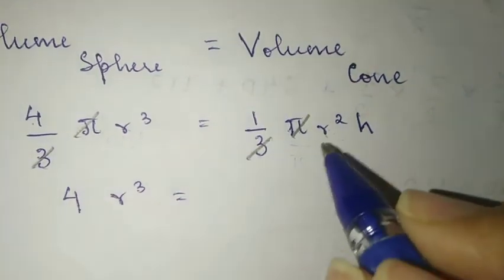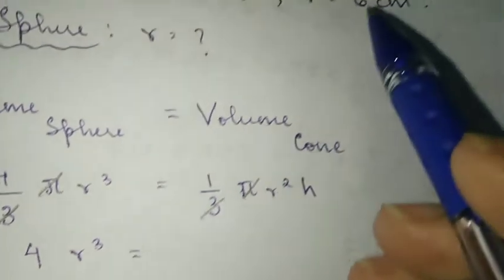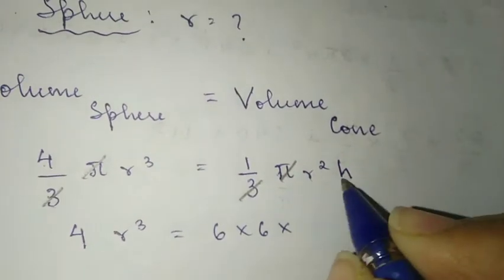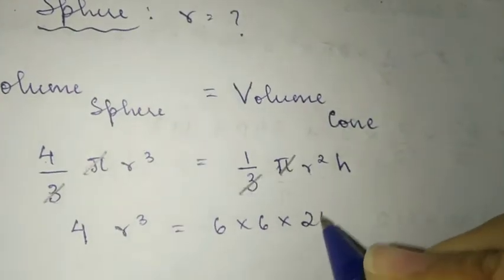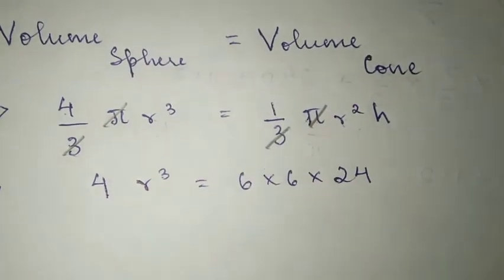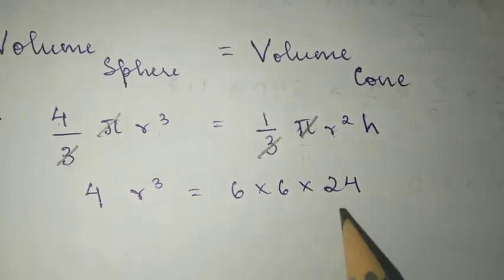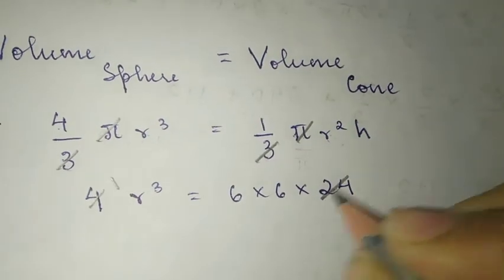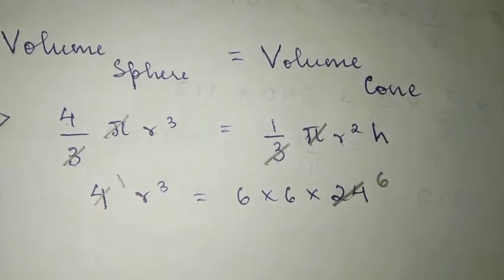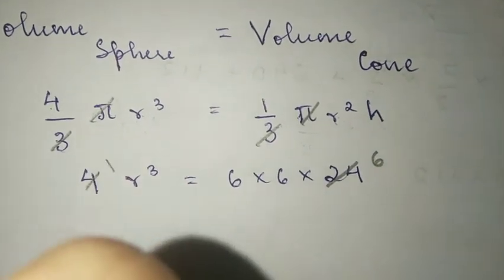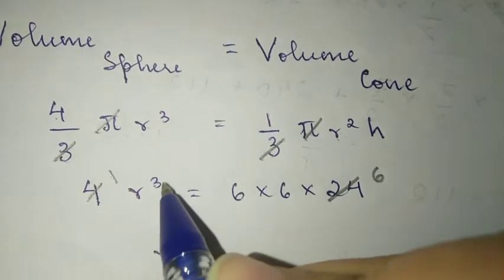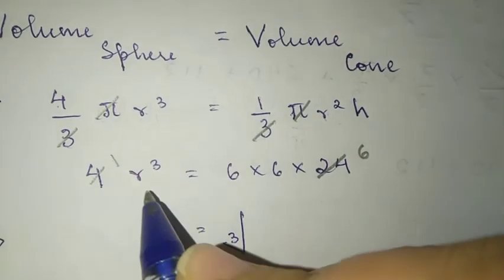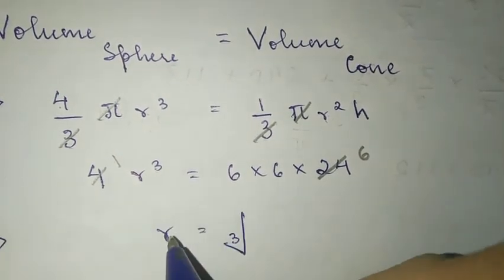So 4 into r cubed equals r squared. We substitute: radius 6, height 24. Dividing both sides by 4, we get 6 times 24 equals r cubed. Taking the cube root of r cubed, we find cube root of 216, which gives r equals 6.